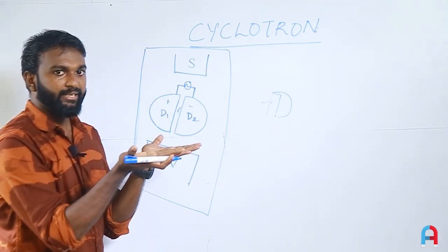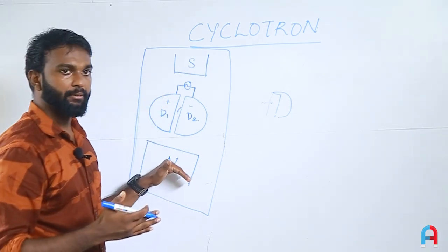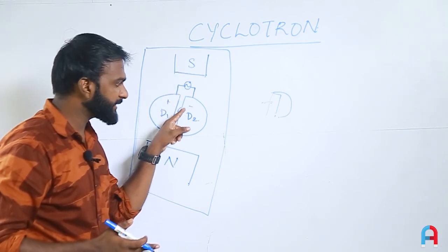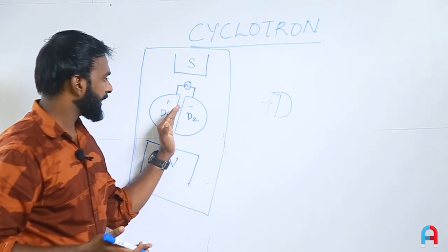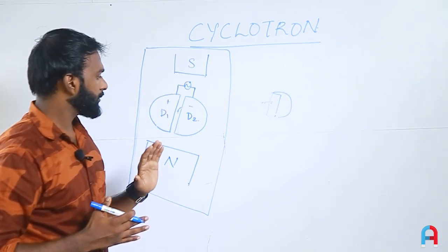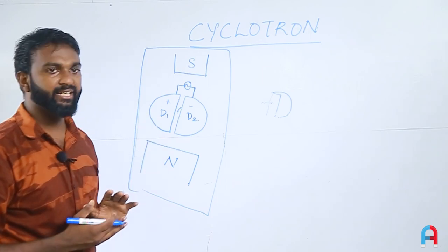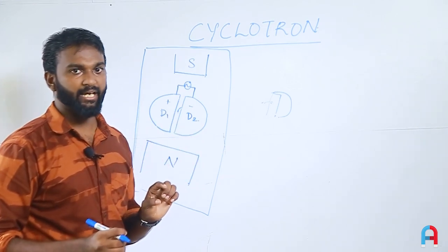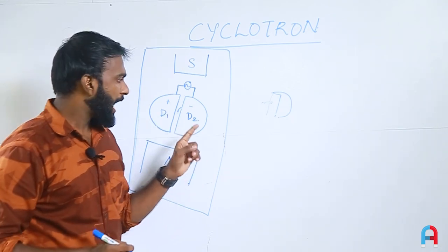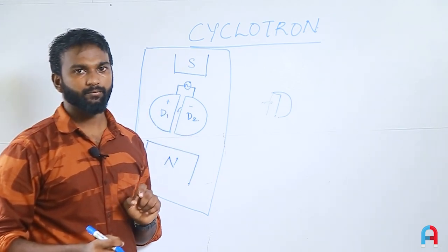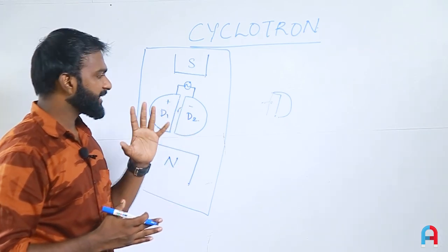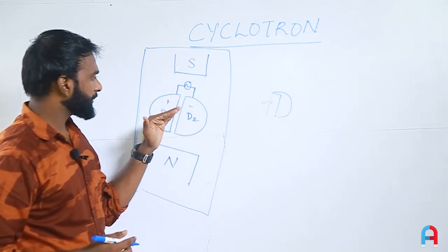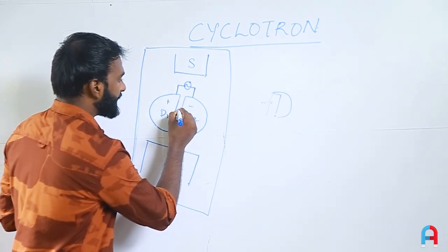Inside the hollow D, the electric field is absent, but the magnetic field is active. Since the particle enters the magnetic field at 90 degrees — perpendicular to the field — it experiences a centripetal force. By the Lorentz force principle, a charged particle moving perpendicular to a magnetic field follows a circular path.